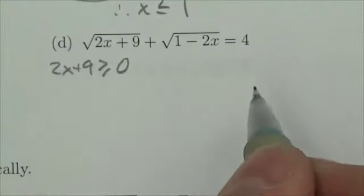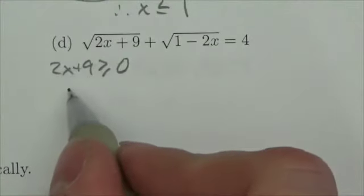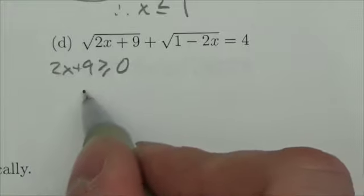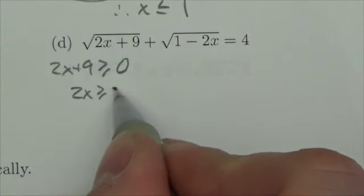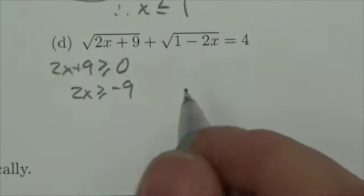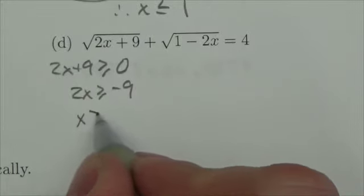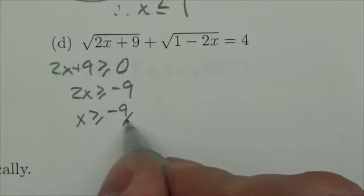Because we are only going to take the square root of positive values, which means 2x plus 9 must be greater than or equal to 0, which means 2x must be greater than or equal to negative 9, or x is greater than or equal to negative 9 halves.